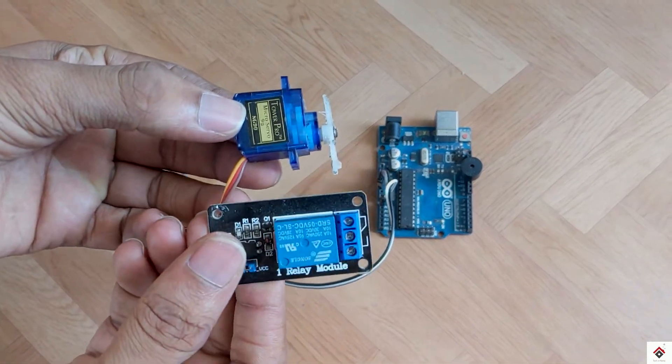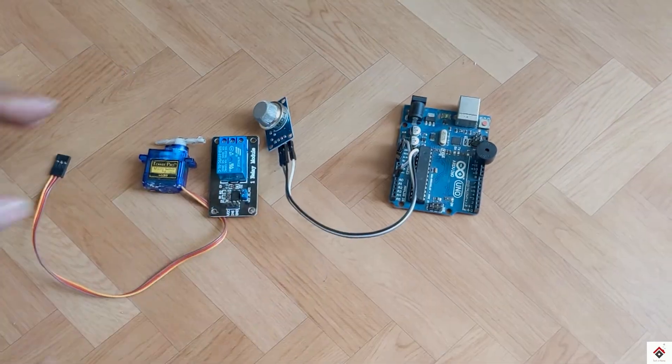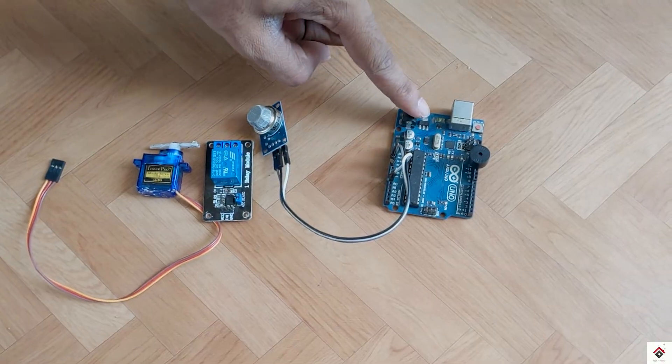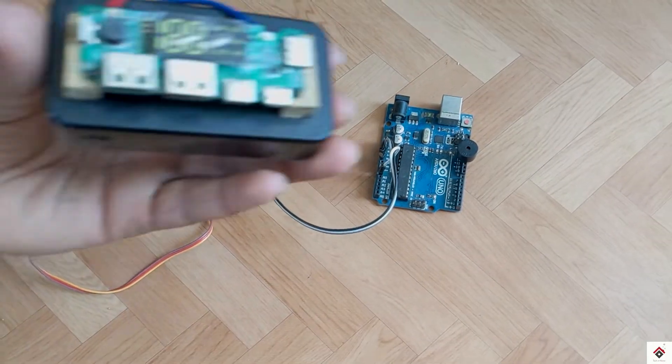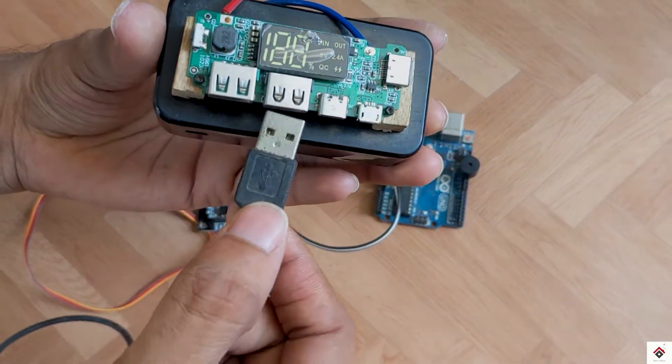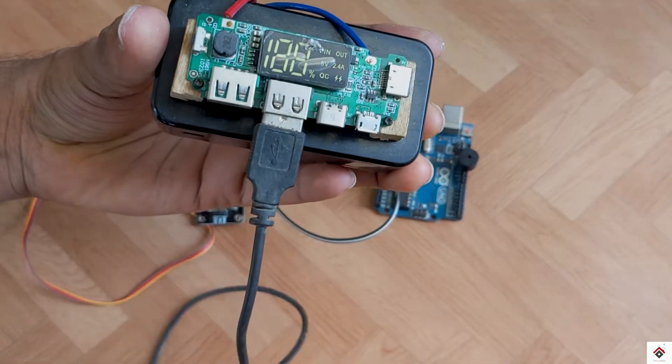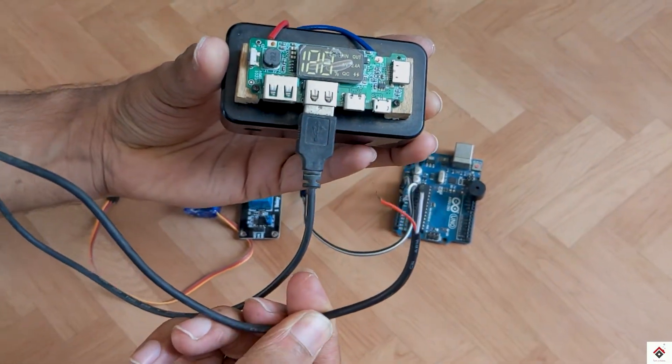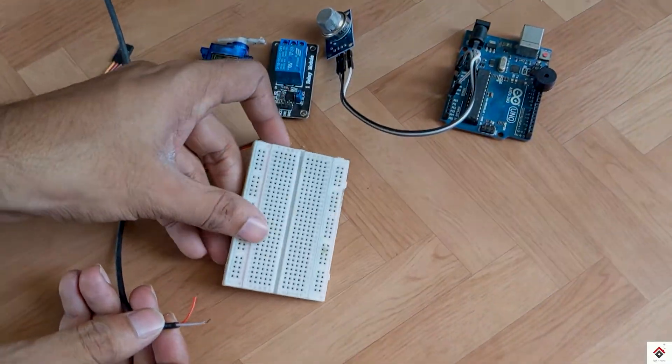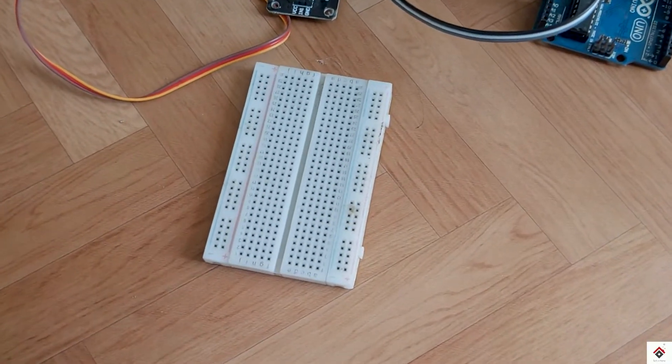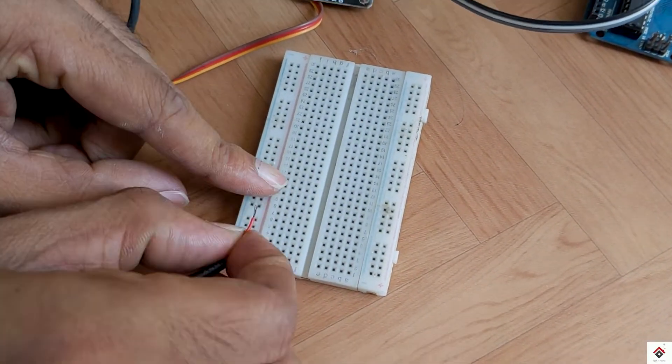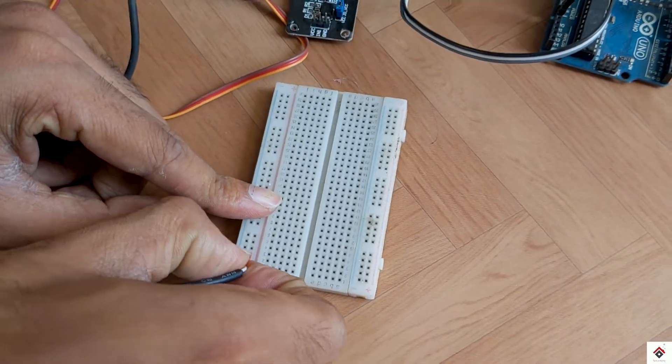Moving to the servo and relay module, these consume more power which is not sufficient from the Arduino 5 volts, so I'll be using the 5-volt external supply from the power bank. Since we need for both of these components, I'll be taking 5 volts and ground common on the breadboard.